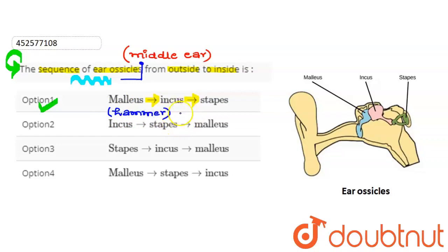Malleus, if we talk about it, is also called hammer—most of the time we call it hammer. Incus is anvil, and stapes is stirrup. These are correct.